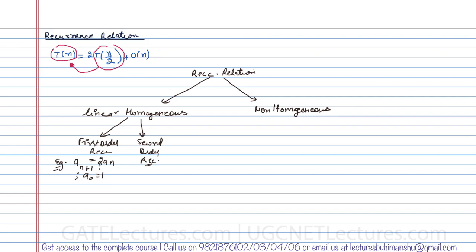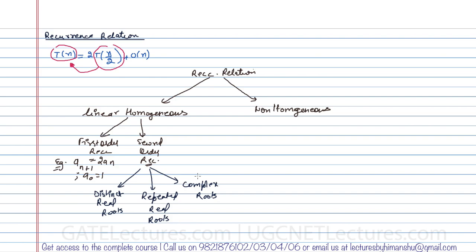The second-order recurrence relation can be divided into three parts: recurrence relations having distinct and real roots, recurrence relations having repeated real roots, and recurrence relations having complex roots. The general form is: b·a(n+2) + c·a(n+1) + d·a(n) = 0. On the right-hand side there are exactly two terms containing a(n). We also have linear non-homogeneous recurrence relations, which contain some extra functions and are trickier to solve.